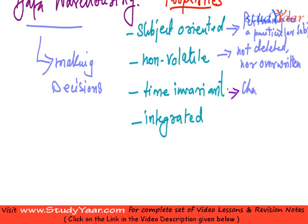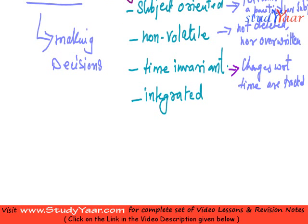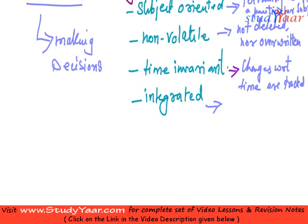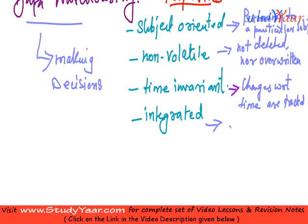Changes with respect to time are tracked. And what is integrated? Integrated means it has information about all the things about a particular subject. If I am talking about an organization, it has information about all the departments and all the functional areas of the organization.